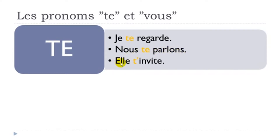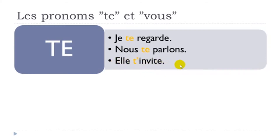The last example for te — I chose on purpose the verb inviter, meaning 'to invite'. If you look carefully, it starts with a vowel, e in this case. As usual in French, when te is followed by a vowel, the e disappears. So the sentence becomes elle t'invite — elle t'invite — meaning 'she invites you'.